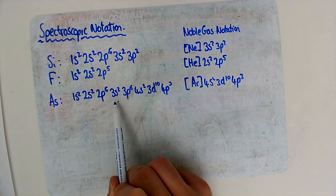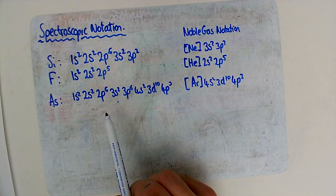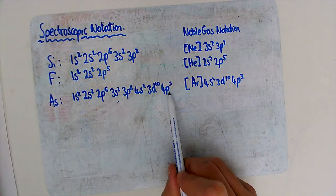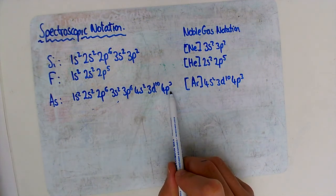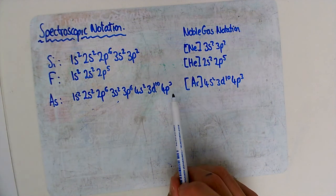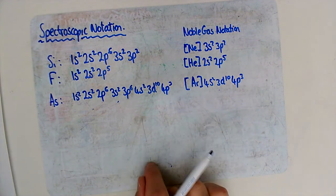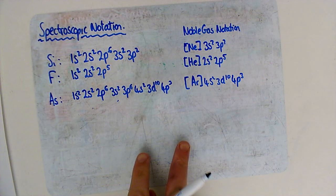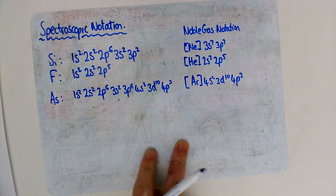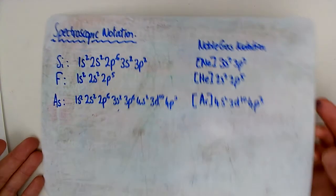The largest element you can be asked about is krypton, which is up to the end of 4p⁶. That's spectroscopic notation — we will come back to it because there are two exceptions.